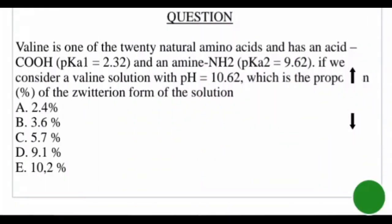Hello everyone and welcome to the session. Please, as you watch, don't forget to subscribe, comment, and share. Today we will be solving a problem on amino acids — specifically valine. Valine is one of the 20 natural amino acids and has a carboxyl group with pKa1 of 2.32.